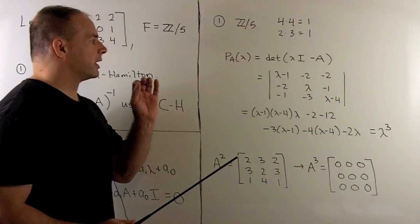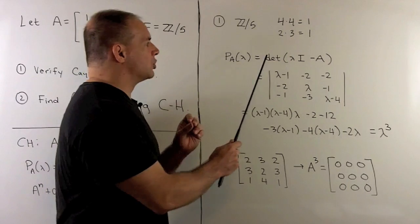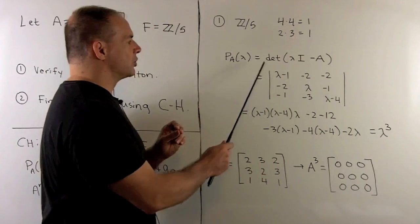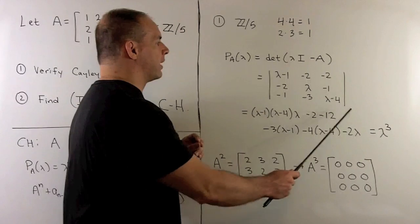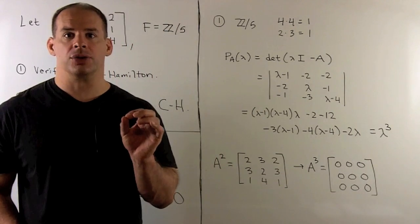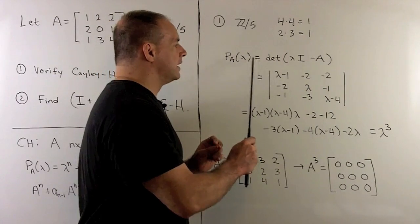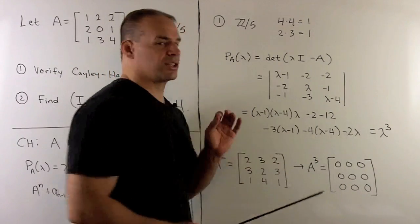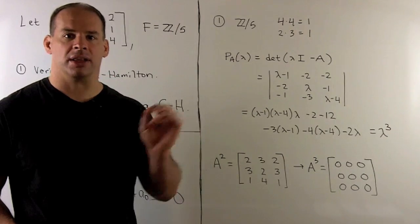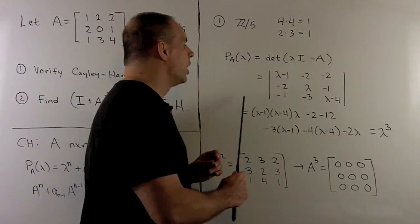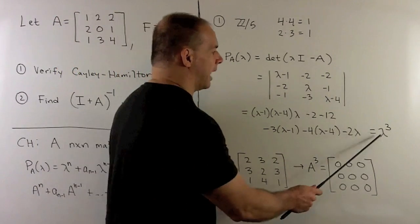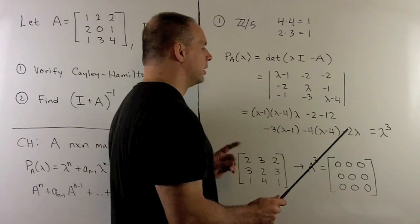If we form the characteristic polynomial, we'll have determinant of lambda I minus A. We're going to take the determinant of this 3 by 3 matrix, and we can use our trick of multiplying down the diagonals. We'll multiply down the diagonals to the right, take the sum, and then subtract off what we get when we multiply down the diagonals to the left. When we work that out, since we're over Z mod 5, we get lambda cubed.